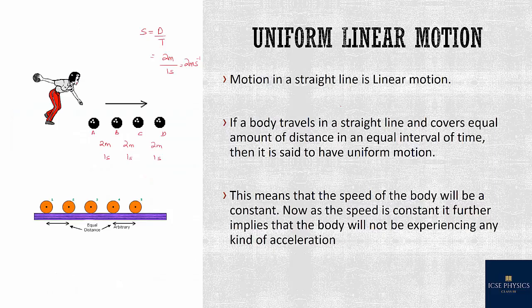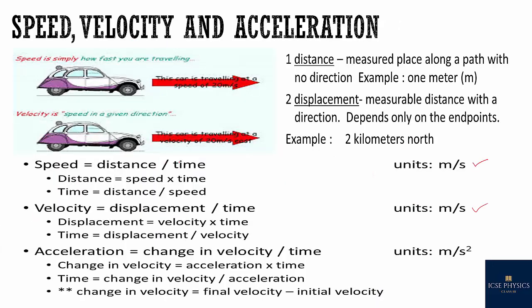Now let's look at uniform linear motion. The speed remains constant, and since the direction is also constant — say east — the velocity is also constant at 2 meters per second east. So what will be the acceleration? Acceleration is change in velocity per time.